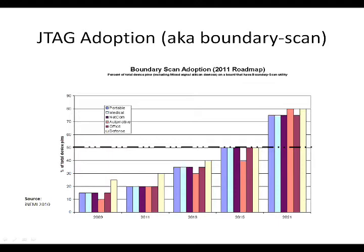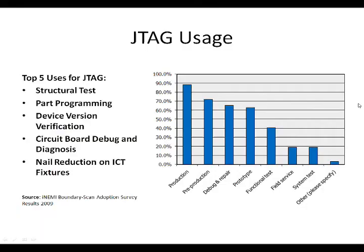By 2015, this is expected to increase to 50%, and within the next 10 years JTAG capability is likely to exceed 70% of the device pins. INEMI also put together a chart which outlines the top 5 uses for JTAG and where JTAG is being deployed. Now if you ask an engineer if they use JTAG, often you'll get an answer of, oh, they use that in manufacturing. So there is a definite stereotype that JTAG is a technology that only applies to manufacturing and production.